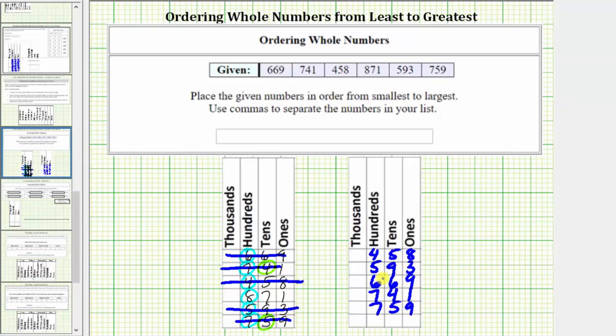There's only one value remaining. The greatest value or largest value in the list is 871.